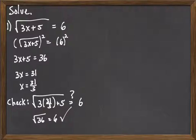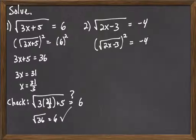And let's move on to a second example. Square root of 2x minus 3 equals negative 4. Once again, we have a square root, so to get rid of it, we square both sides. When we square the square root, it will go away, and when we square negative 4, we would get 16.